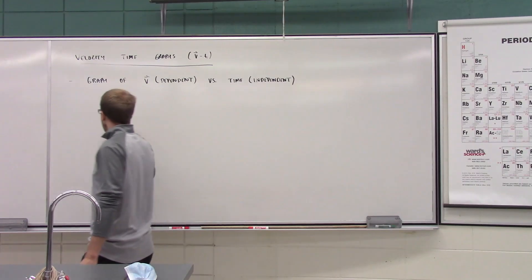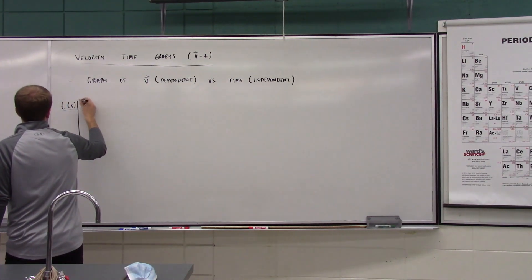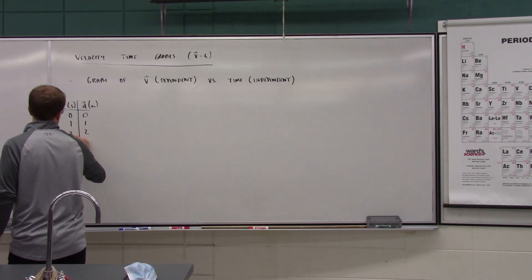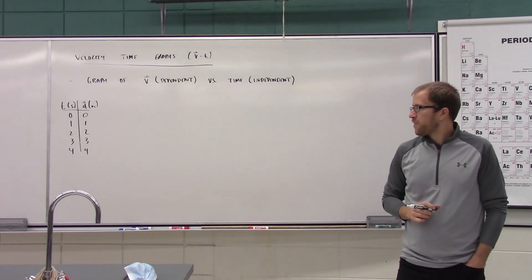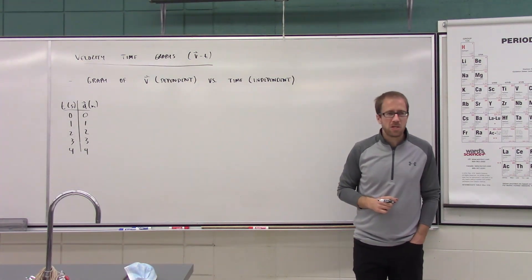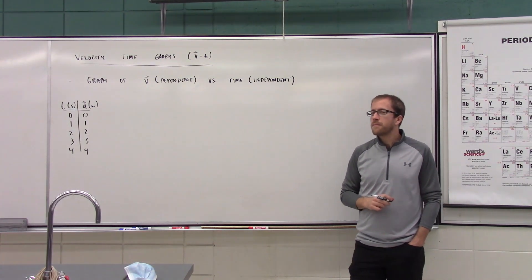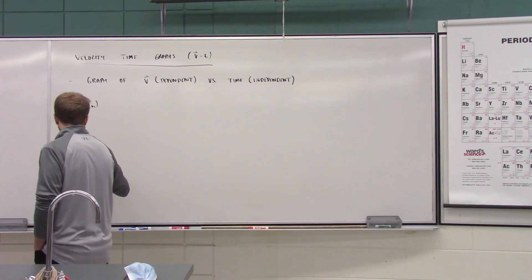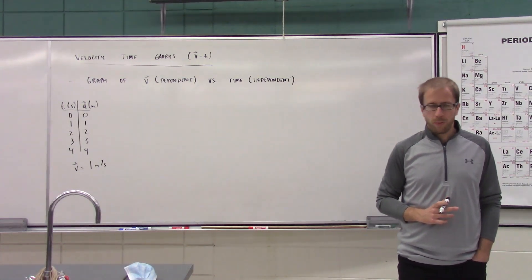Let's start with a very simple example. Going back to our position-time example — looking at that data set, what is the velocity of our object? For every second, we're increasing our displacement by one meter, so our velocity is one meter per second.